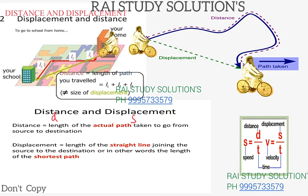We are going to learn two more things. One is velocity and one is speed. What letter does velocity represent? Velocity is represented by the letter V.